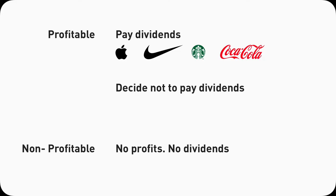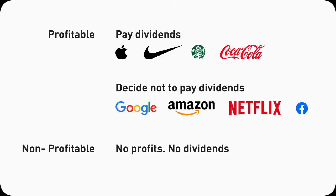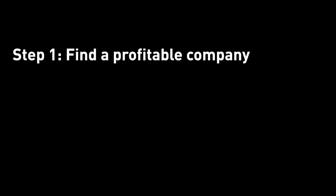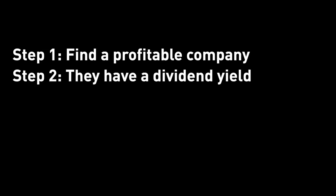There are also many companies that are profitable but not paying dividends — Google, Amazon, Netflix, Facebook. They keep their profits and reinvest back into the company to grow bigger and make more money in the future. To get your dividend, all you have to do is identify a profitable company with a dividend yield and a declared dividend amount on their earnings report.